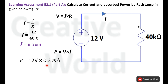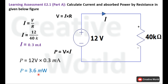Here we have taken current with a positive sign because this current is entering from the positive terminal and leaving from the negative terminal, so this current is taken with a positive sign. The power of the resistance is 3.6 milliwatt, and because of the positive sign, this power is being absorbed by the 40 kilohm resistor.